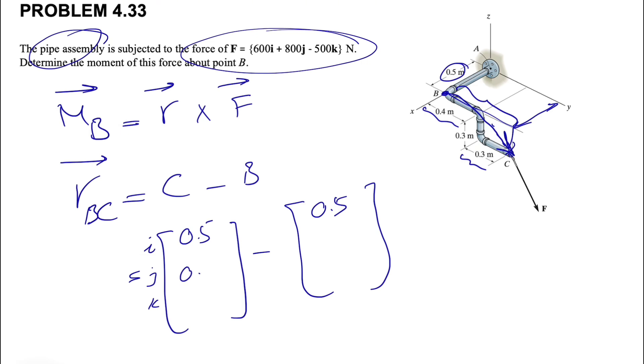So we'll get 0.7. And we can see that point B is in X, Z plane, so there is no Y for point B.